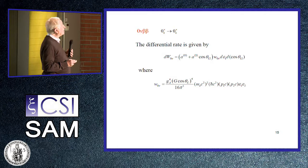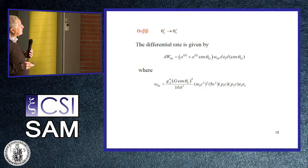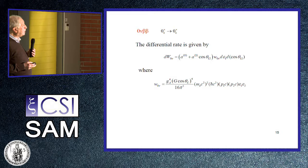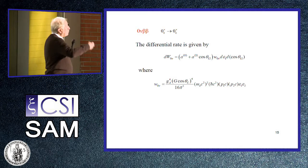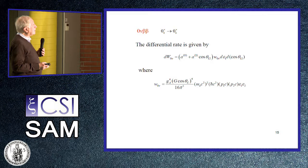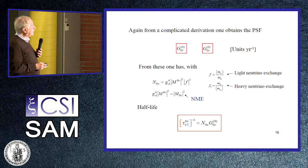For neutrinoless double beta decay, the differential rate has a similar expression but neutrinos have disappeared. There is only the energy of one of the electrons and the angle between the two electrons. This depends on GA, the Fermi coupling constant, the Cabibbo angle, and other powers of pi. The momenta p1 and p2 and energies epsilon-1 and epsilon-2 of the electrons appear, and each quantity is obtained by integrating over variables from the solution of the Dirac equation.